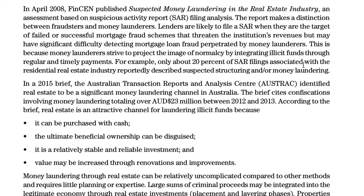In April 2018, FinCEN published 'Suspected Money Laundering in the Real Estate Industry,' an assessment based on Suspicious Activity Report (SAR) filing analysis. The report makes a distinction between fraudsters and money launderers. Lenders are likely to file a SAR when they are the target of failed or successful mortgage fraud schemes that threaten the institution's revenues, but may have significant difficulty detecting mortgage loan fraud perpetrated by money launderers. This is because money launderers strive to project the image of normalcy by integrating illicit funds through regular and timed payments. For example, only about 20% of SAR filings in the residential real estate industry reportedly describe suspected structuring and/or money laundering.